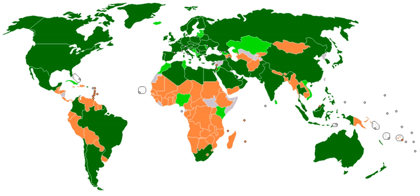Currently, 82 countries are members while another 82 participate in the affiliate country program, which is not a form of membership but is designed to help industrializing countries get involved with the IEC. Originally located in London, the Commission moved to its current headquarters in Geneva in 1948. It has regional centers in Asia-Pacific (Singapore), Latin America (São Paulo, Brazil), and North America (Boston, United States).